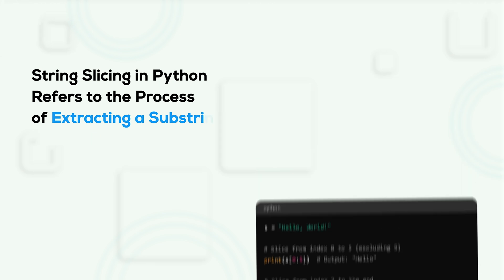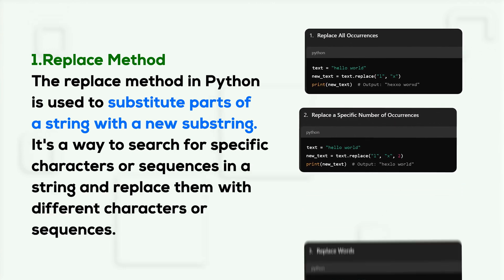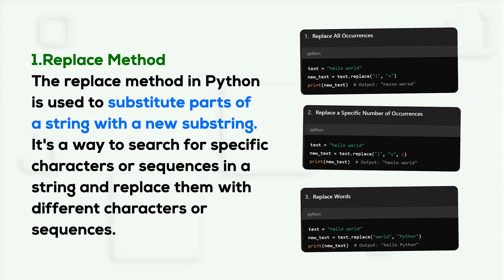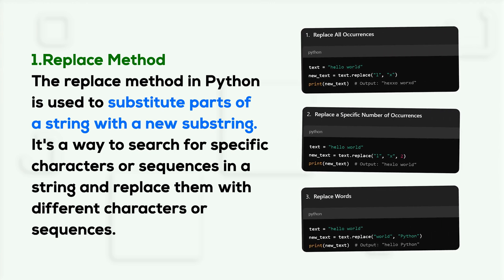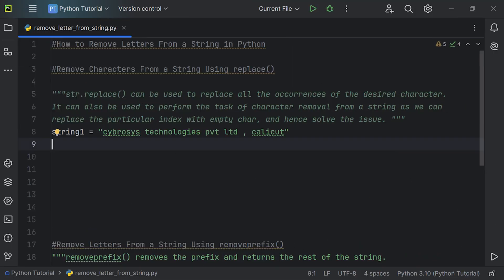Method one is using the replace() method. You can use the replace() method to replace all occurrences of the desired character. It can also be used to perform character removal from a string, as we can replace the particular index with an empty character. First, we just need to initialize the string, then create a new string variable named 'new_string' to store the result.